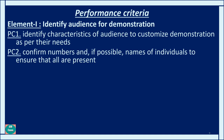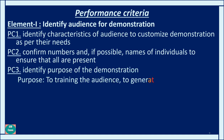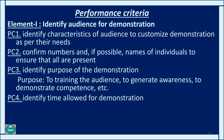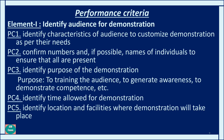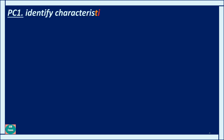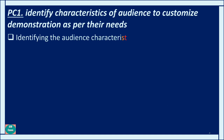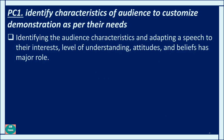The performance criteria include: PC2 is confirm number and if possible name of the individual to ensure that all are present. PC3 is identify purpose of demonstration — purpose to train the audience, to generate awareness, to demonstrate competency, etc. PC4 is identify time allowed for demonstration. PC5 is identify location and facility where demonstration will take place. So in Element 1, we discuss how to identify our audience for demonstration. The first performance criteria is: identify characteristics of audience to customize demonstration as per their need.